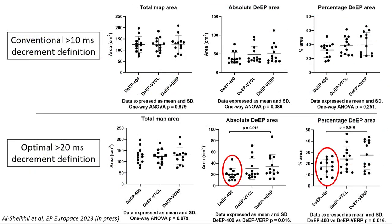Does this translate into reducing the ablation target area? Yes. When comparing the absolute deep areas using the 10-millisecond versus 20-millisecond decrement definition, there was a near 50% reduction in the ablation target area. All these patients underwent deep 400-guided ablation, and over six-month follow-up there was 92% freedom from any VT.